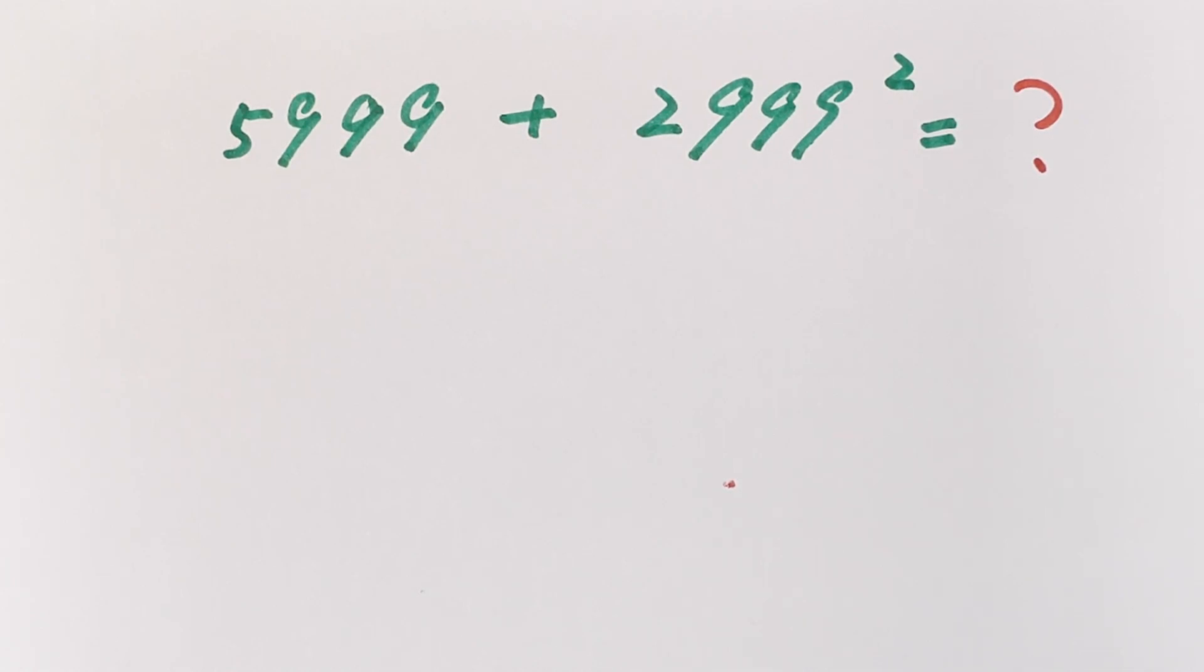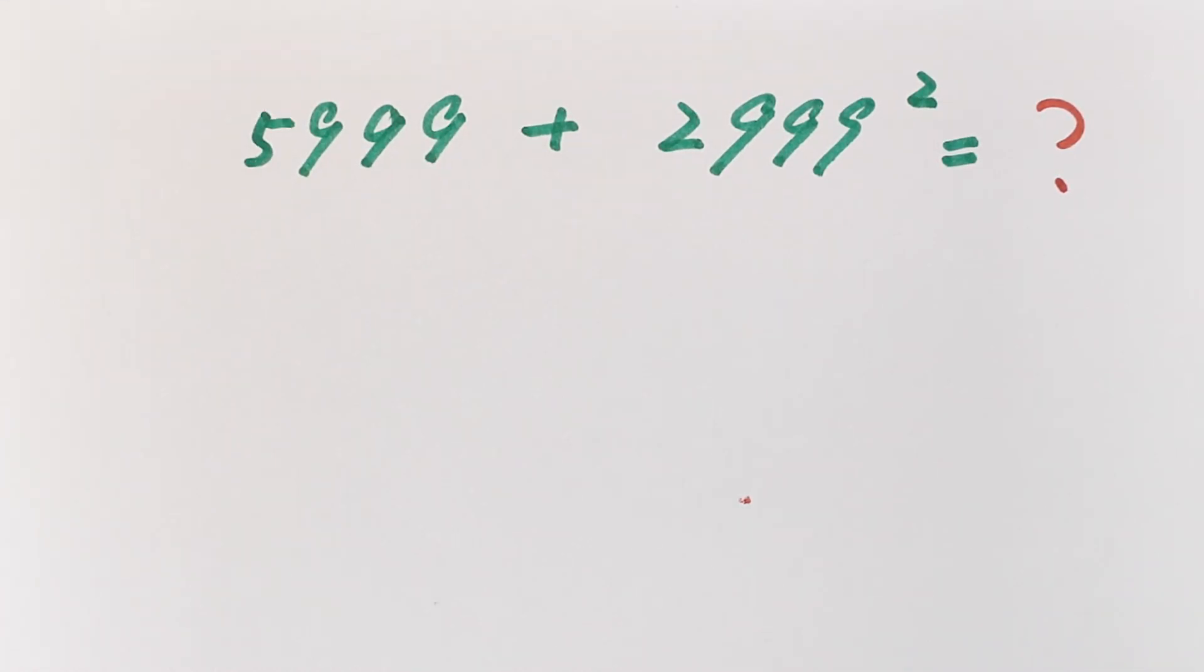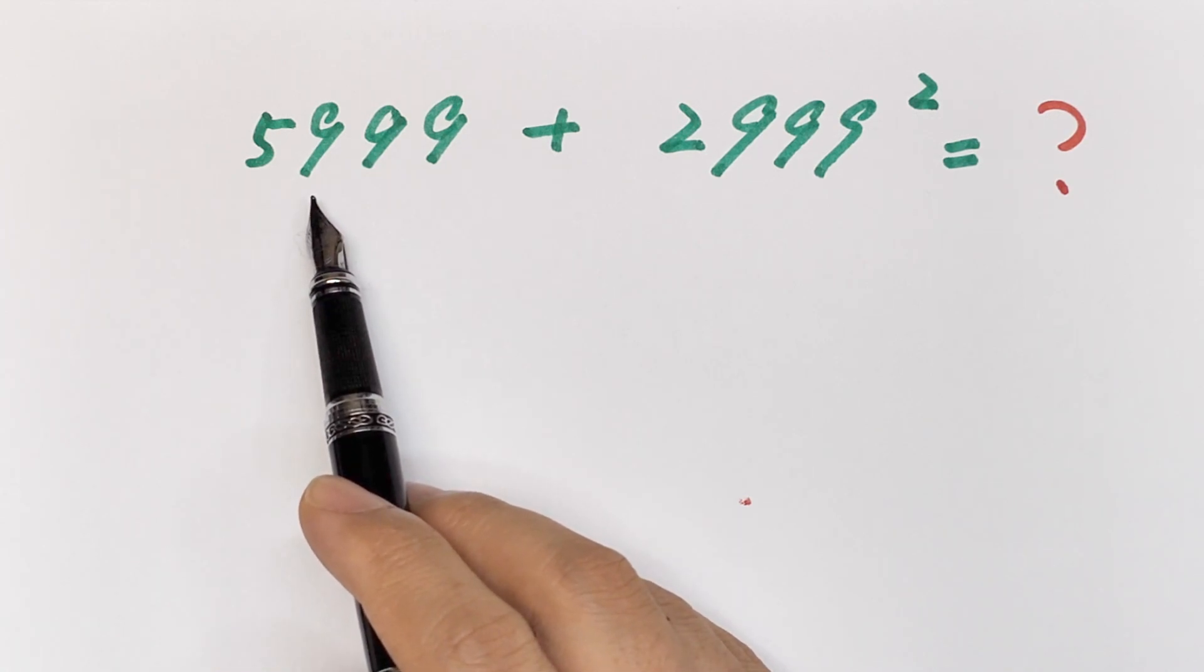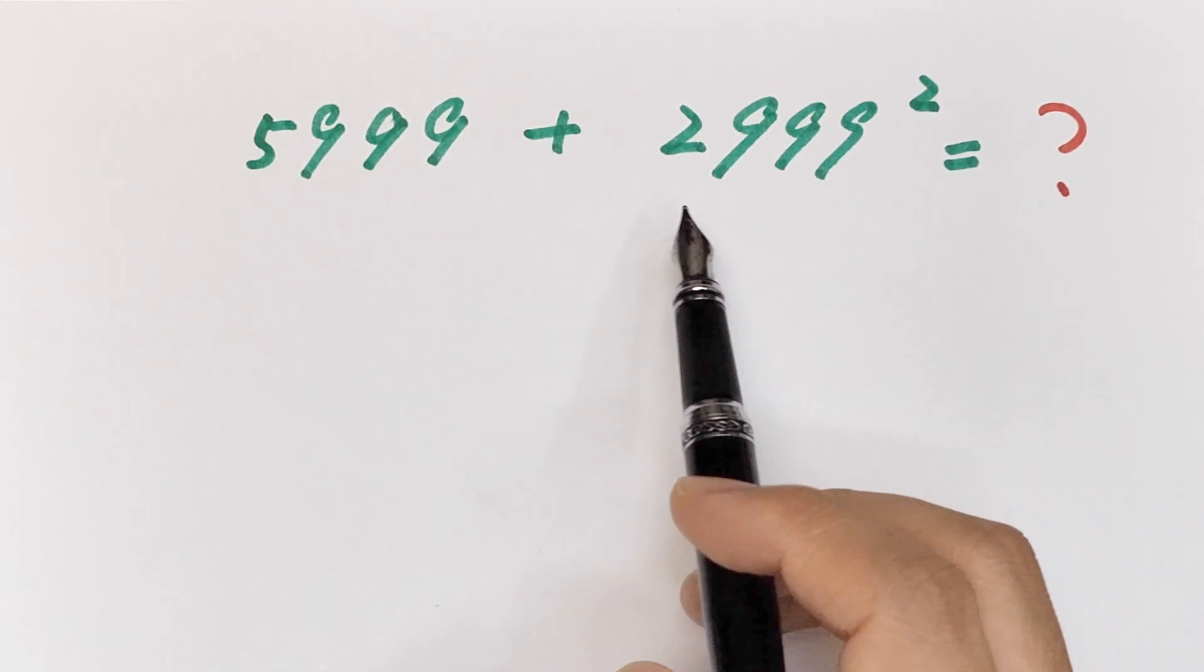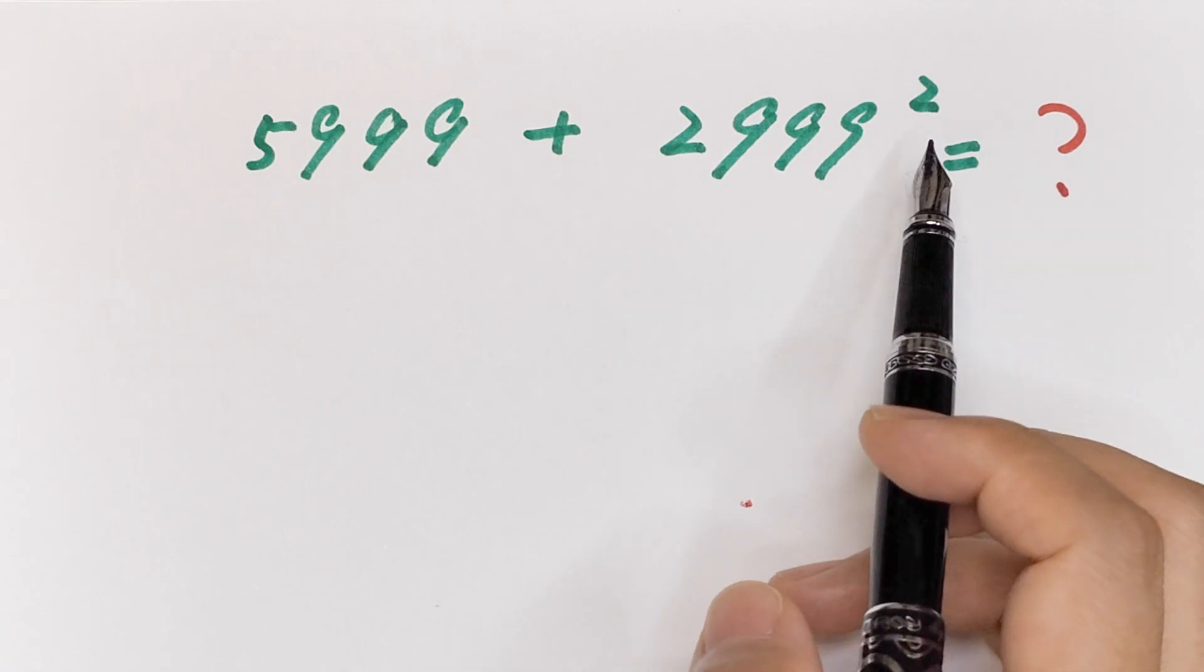Hello everyone, welcome to Math4U. How to solve 5999 plus 2999 square?